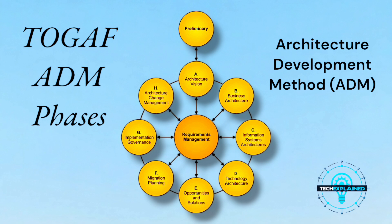Moving on to Business Architecture, Phase B. Here's where you ask: what does the business need to achieve this vision? For your house, this is like listing the rooms and their purposes — kitchen for cooking, living room for chilling, and so on. In a company, it's about understanding workflows, processes, and business goals. You map out what needs to happen from the business side to support the vision.